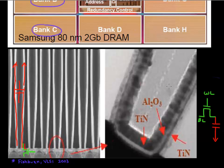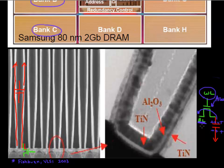The way a DRAM cell works is that you store charge on the capacitor. The access transistor's purpose is to help access that charge — if the capacitor is charged and you turn the transistor on, that charge transfers onto the bit line and you sense the voltage increase. A key requirement for the capacitor is to have as high a capacitance as possible to store a large quantity of charge. The transistor must also have low off-current so that the stored charge does not leak away.